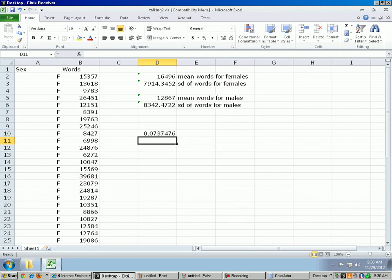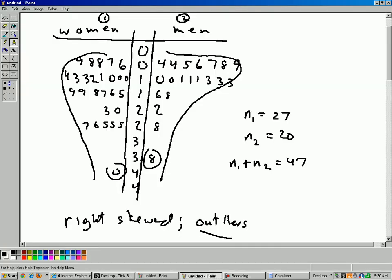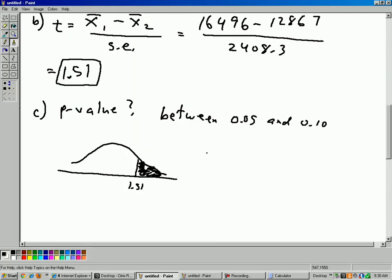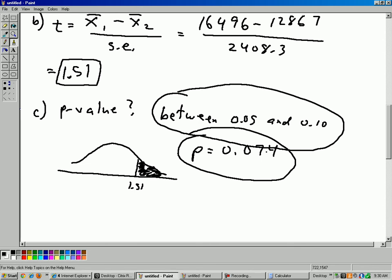So one more time. Let me show you the syntax there. Tdist, the t-score, 1.51, comma, the degrees of freedom, 19, comma, and then a one. And so that's 0.07, about 0.74 rounded off. And if you use a calculator, you would get the same answer. So 0.074 is our p-value. And yes, indeed, that is between 0.05 and 0.10. So the table gave us the correct answer.